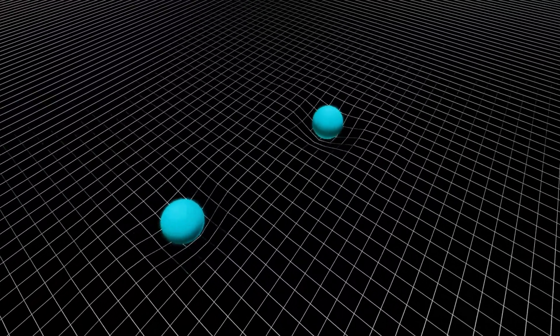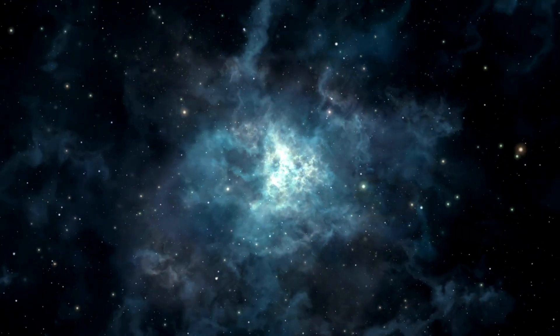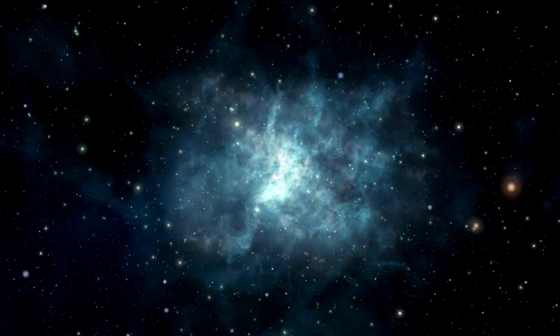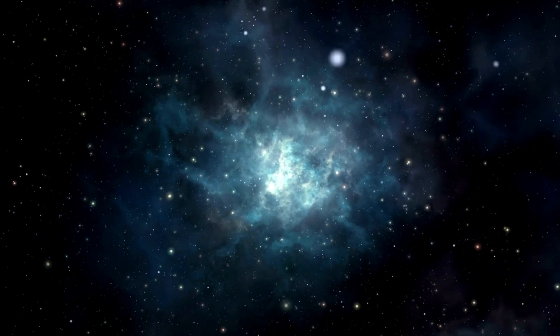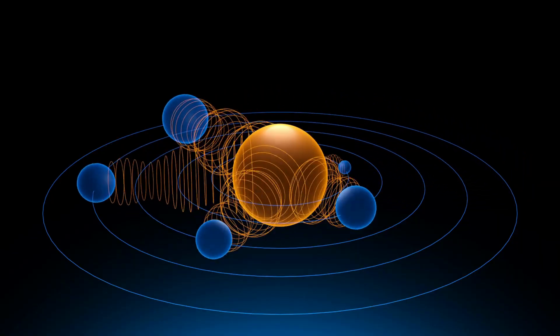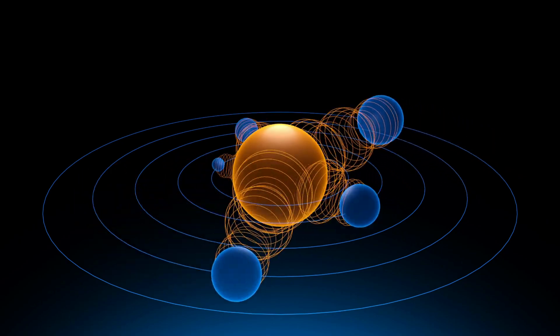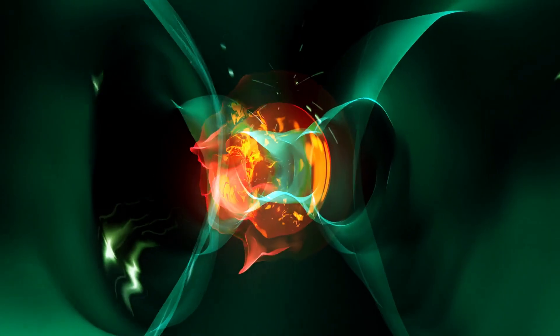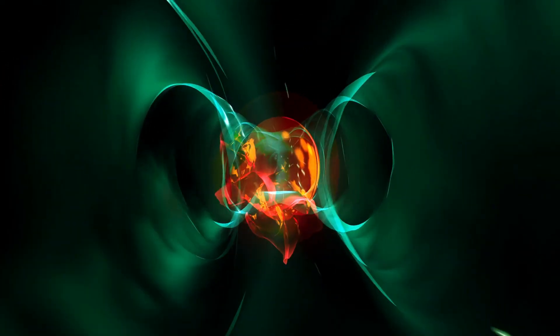Central to quantum field manipulation is the notion of quantum vacuum fluctuations. Even in seemingly empty space, particles and antiparticles are spontaneously created and annihilated, in a dance of energy governed by the uncertainty principle. These fleeting fluctuations exist on such miniscule scales that their effects are typically imperceptible, but their implications for energy manipulation are profound.